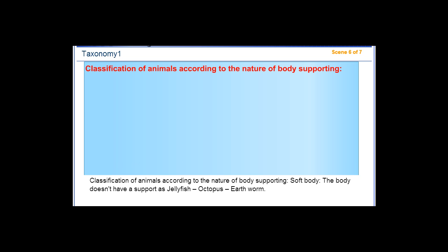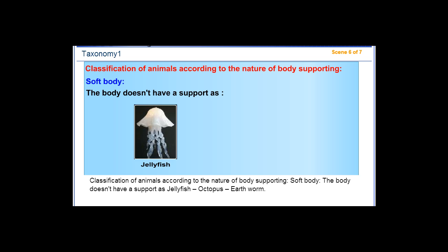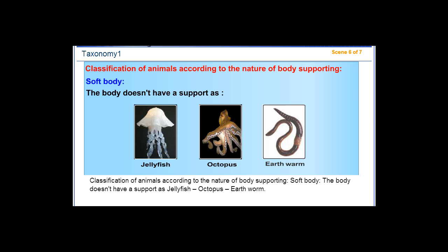Classification of animals according to the nature of body support: Soft body — the body does not have a support — as jellyfish, octopus, and earthworm.